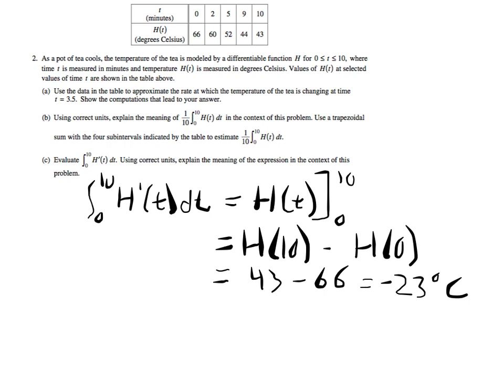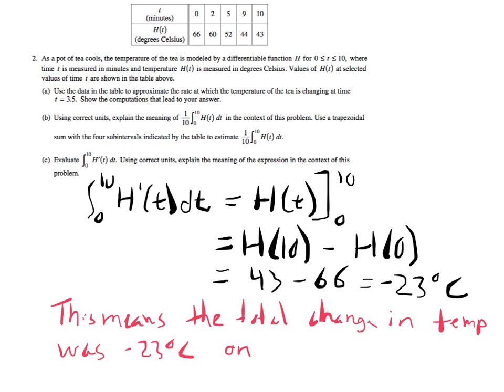And it says using correct units, explain the meaning of this expression in the context of this problem. Anytime you take the integral of a rate of change, you're getting the net change. And so if we're taking the integral of H prime, which is of course a rate of change, it's a derivative, I'm getting the net change or the total change in temperature. So what this represents is the total change in degrees Celsius on the interval. This means the total change in temperature was negative 23 degrees Celsius on the interval from 0 to 10. There we go. So that's both parts. And always make sure that you do answer both parts of a question.